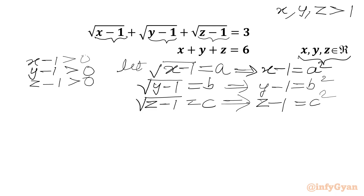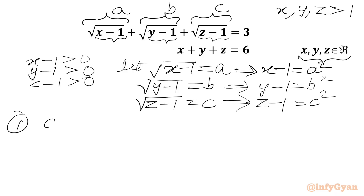So our substitution gives us square root of (x-1) = a, square root of (y-1) = b, square root of (z-1) = c. Our first equation is: a plus b plus c equals 3.